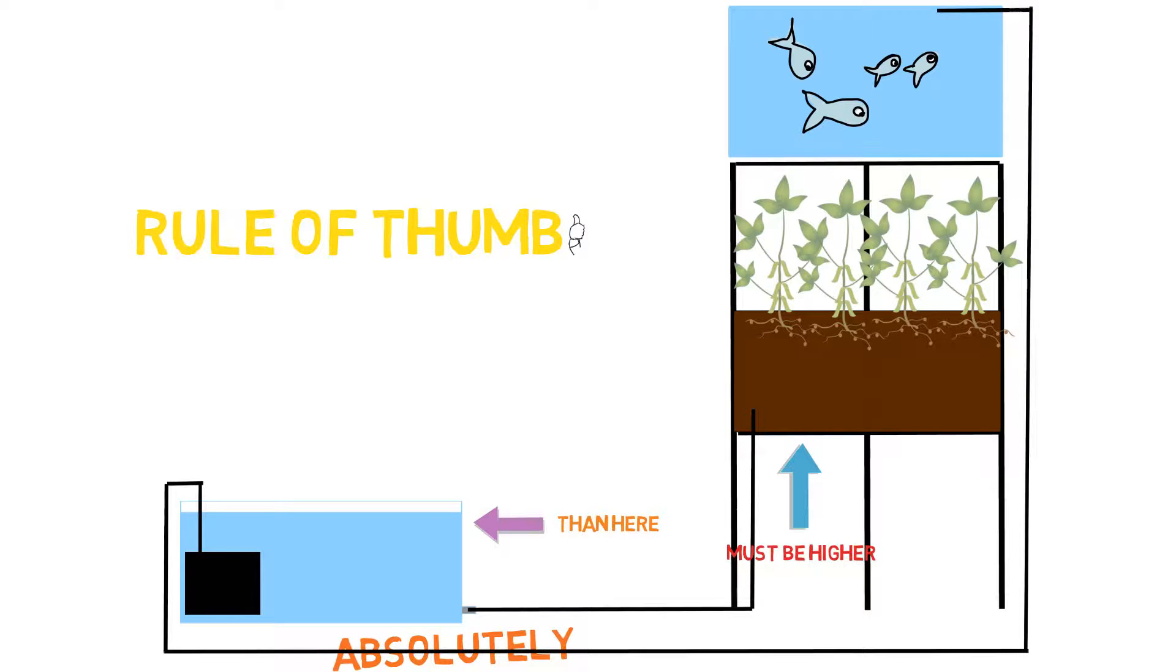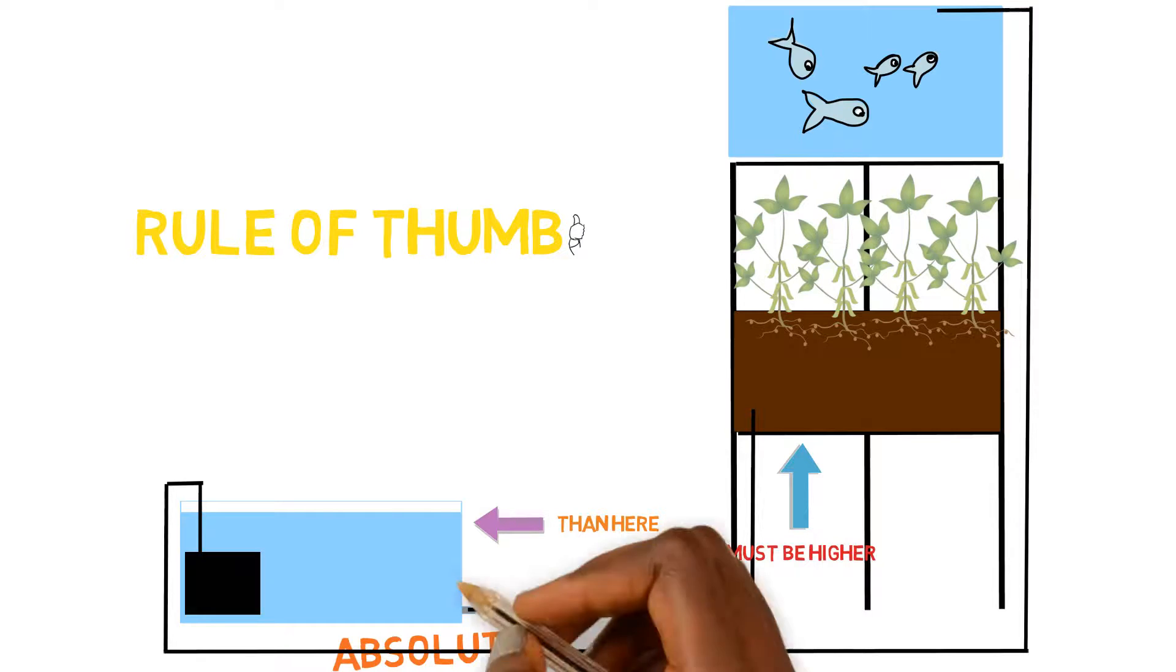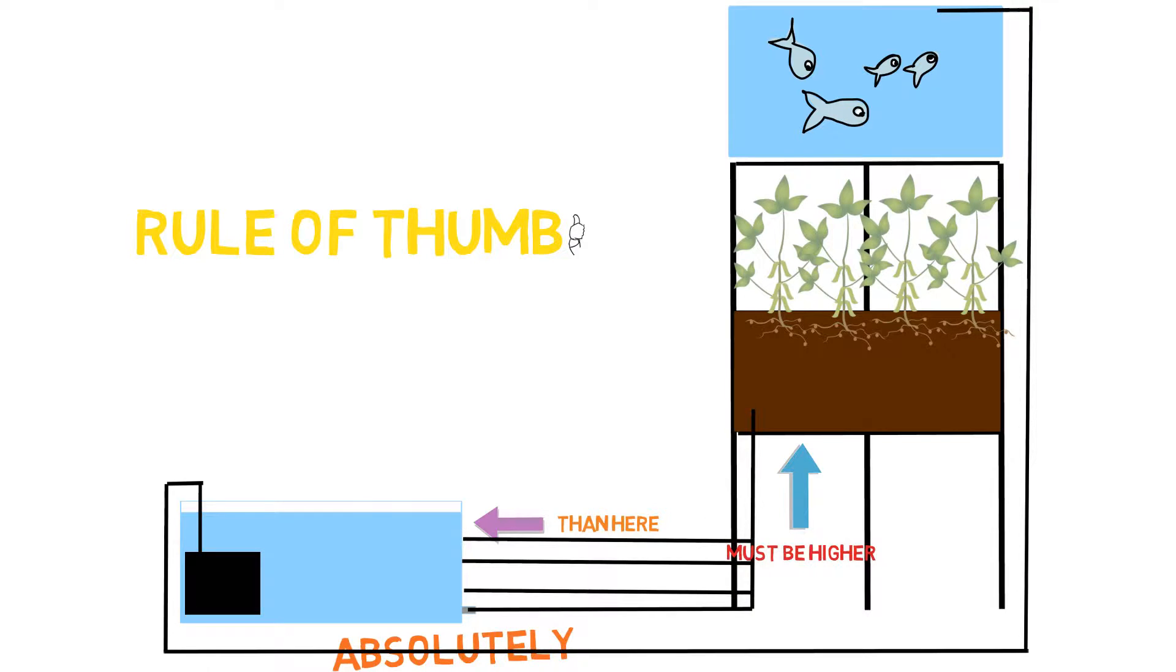So as long as it's higher, your grow bed is higher, you're able to connect a pipe to any part of the sump tank that you want to connect it to.